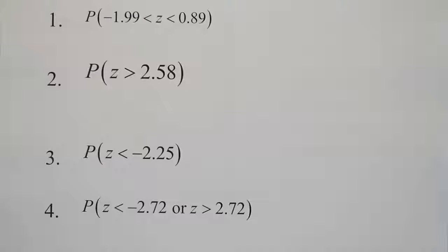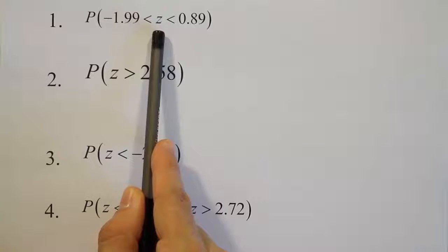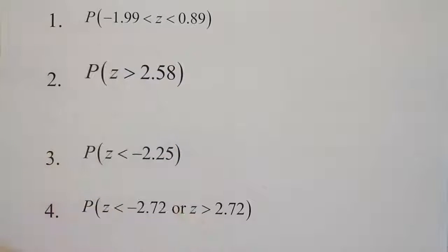In this video we're looking at how to use the graphing calculator to find area under the normal bell curve — in this case the standard normal bell curve because we have the variable z in our problem. So let's start with the technique that we should use to have good habits, which is to draw a picture first. So the first thing I'm going to do is draw the bell curve for the first example that we want to solve.